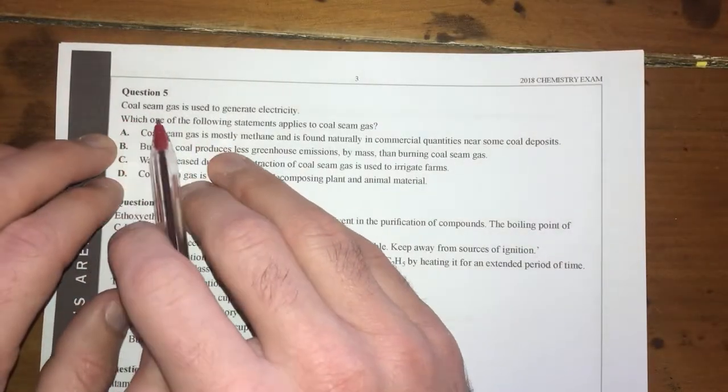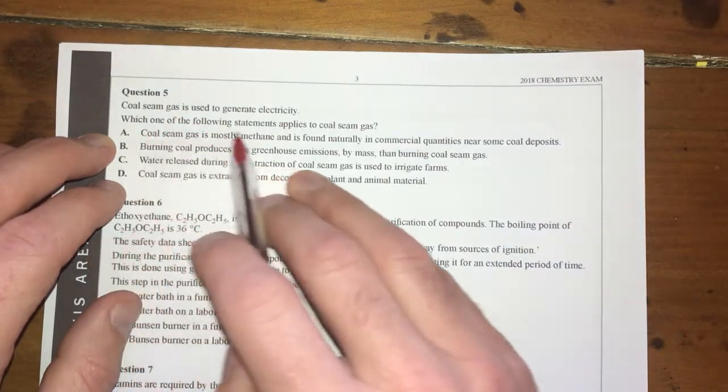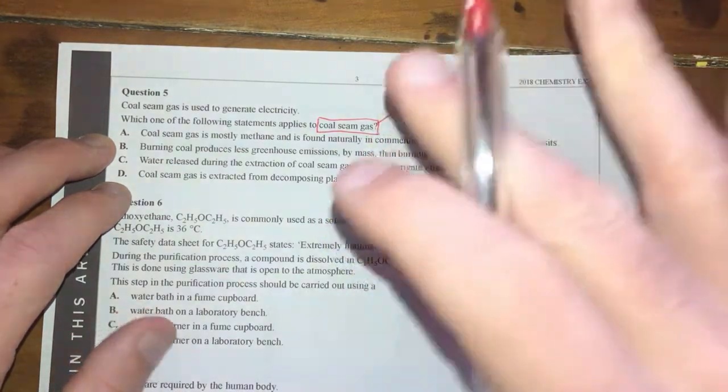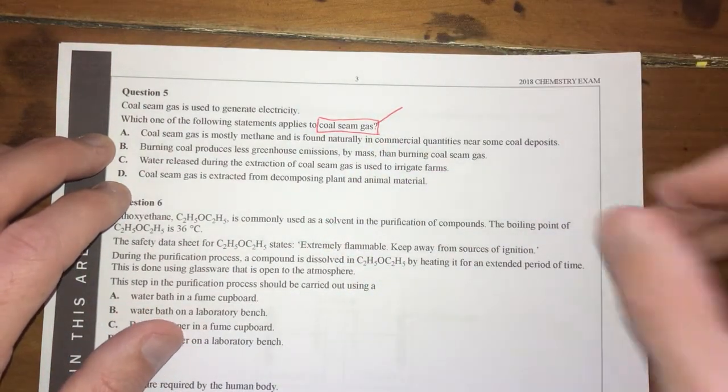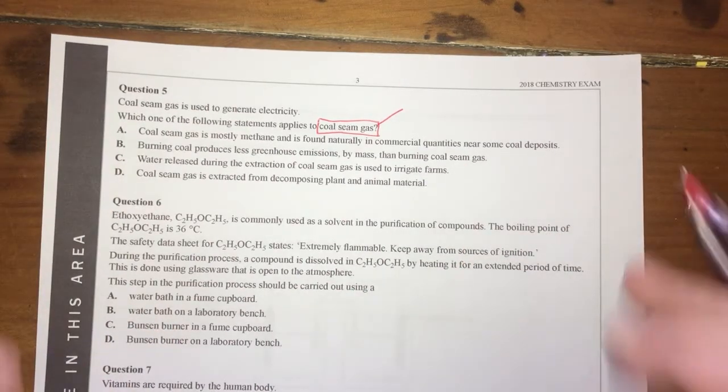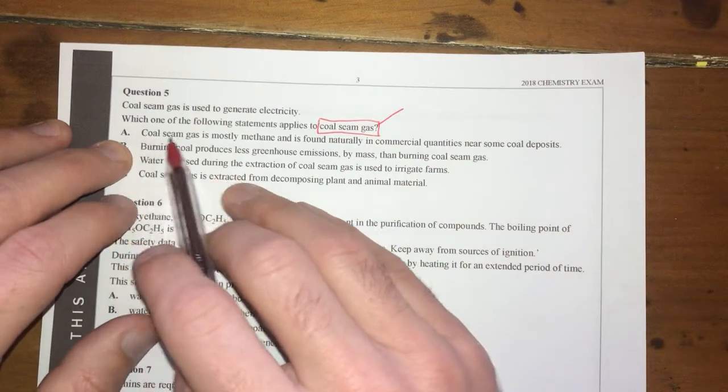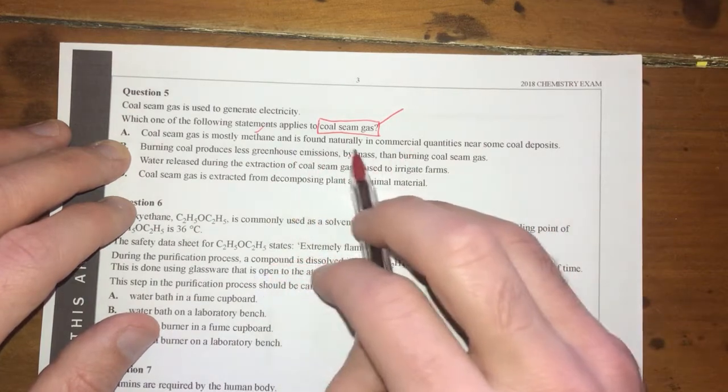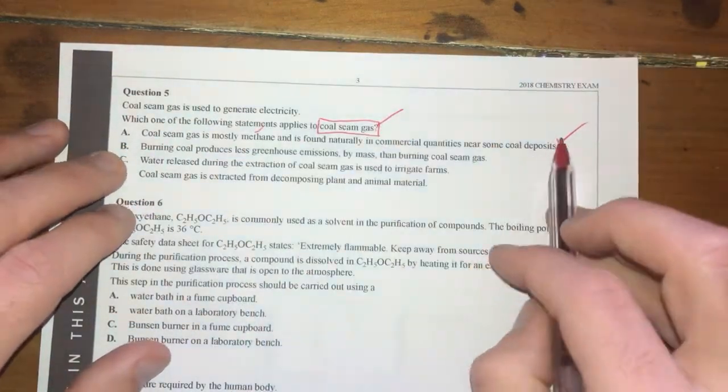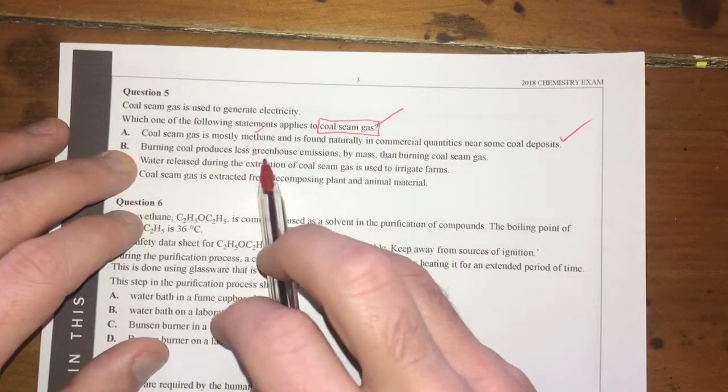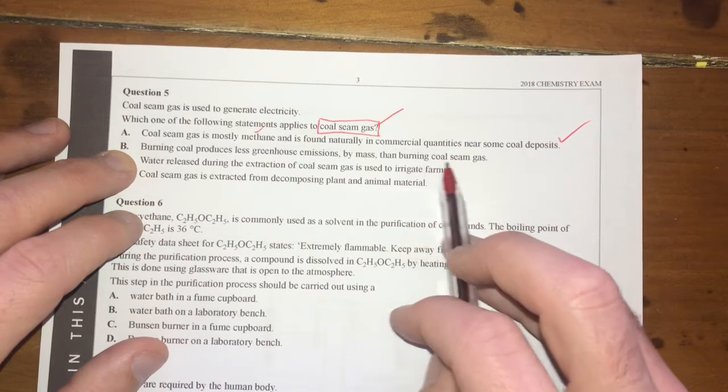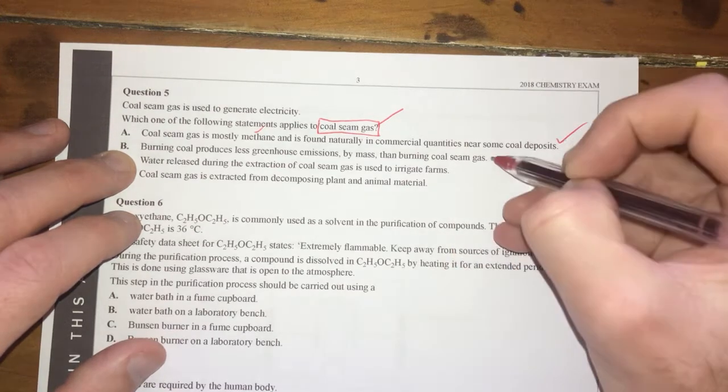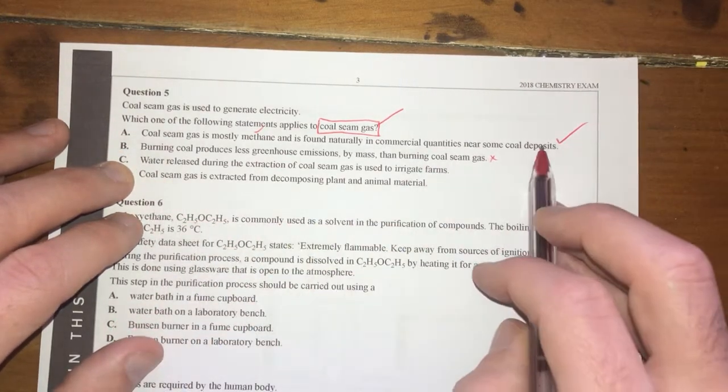Question five: coal seam gas is used to generate electricity. Which statement applies? What is coal seam gas? It's gas trapped in coal deposits underground. You pump in chemicals and out pops the gas—you don't have to open up a large mine. Coal seam gas is mostly methane, which is correct. It is found naturally in commercial quantities near some coal deposits—that's true, I reckon that's pretty good. Burning coal produces less greenhouse gas emissions by mass than burning coal seam gas—not entirely true, I don't think. I'll come back to it. Definitely A is correct.